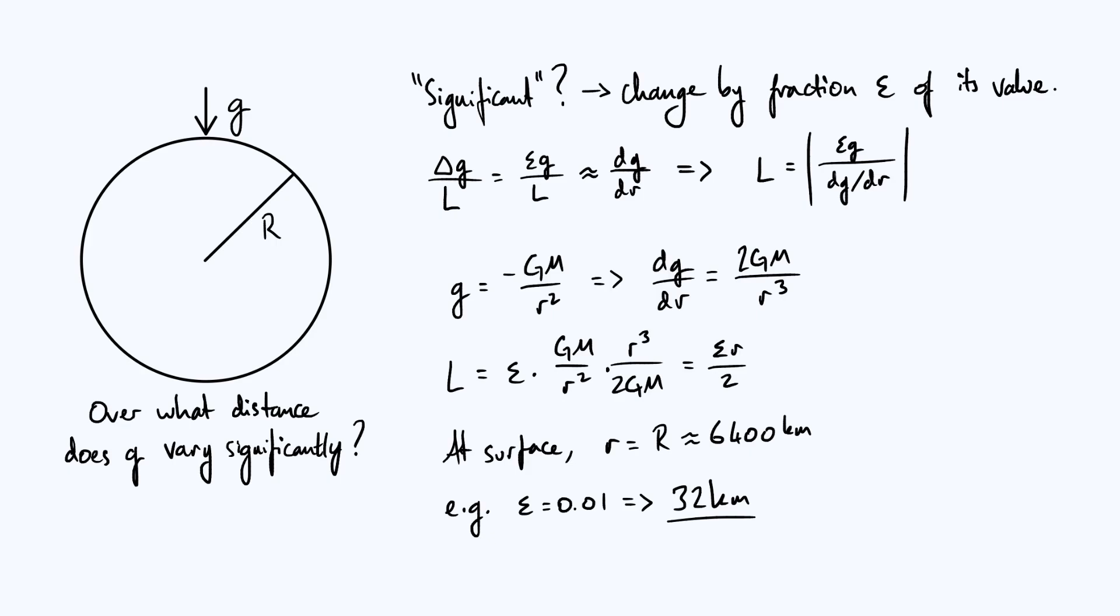For reference, that's about four times the height of Mount Everest above sea level, or equivalently about four times the typical altitude of a commercial passenger jet. And that's just for one percent variation in g, and therefore we've kind of justified why it's okay to assume that g is constant on everyday length scales.